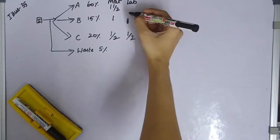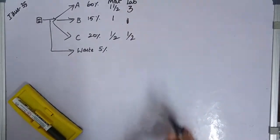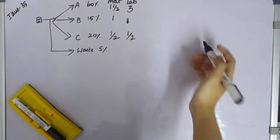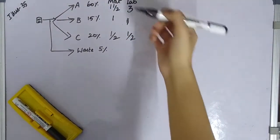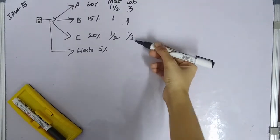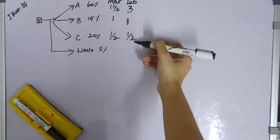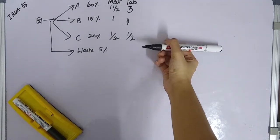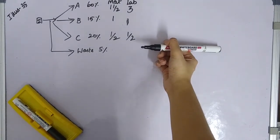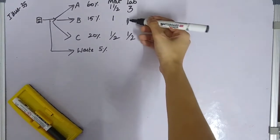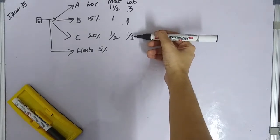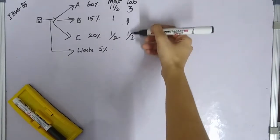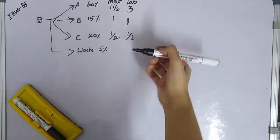If B equals one labor hour, then C equals half a labor hour. Product A requires double the time needed for the production of one unit of B and one unit of C combined. So A = double of (1 + 0.5) = double of 1.5 = 3. So the labor ratio is A:B:C = 3:1:0.5.